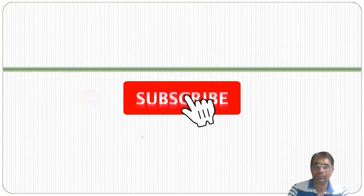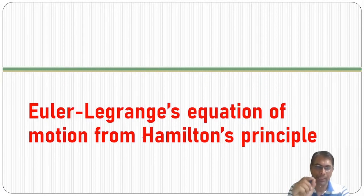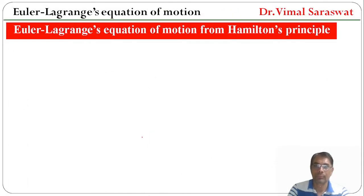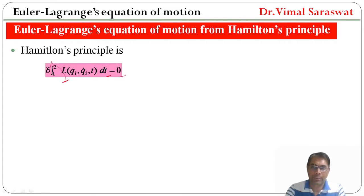Hamilton's principle states that δ∫₁²L dt = 0, where L is the Lagrangian. The Lagrangian is a function of qi, q̇i, and t — meaning L is a function of the generalized coordinate, velocity, and time.